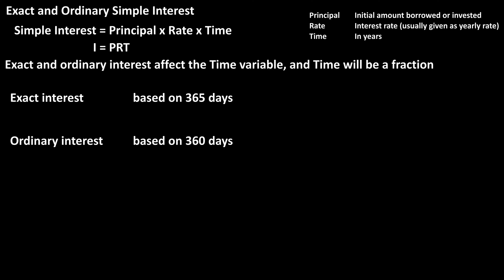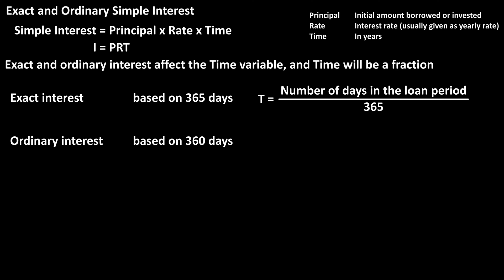Exact and ordinary interest are going to affect the time variable in this formula, and the time variable will be a fraction. If you are using exact interest, time, or T, will be equal to the number of days in the time period over the number of days in a year. So for exact interest, the denominator — the bottom number — will be 365 for 365 days.